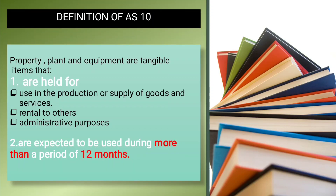So we will go to the definition. Property, Plant and Equipment are tangible items. The first condition is that they are held for use in the production or supply of goods and services, for rental to others, or for administrative purposes.